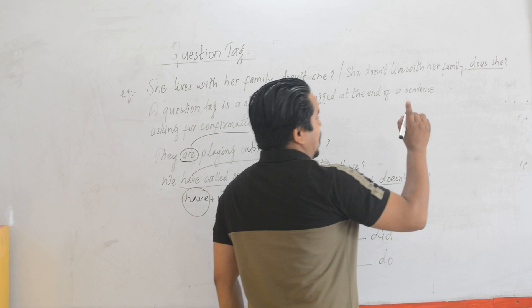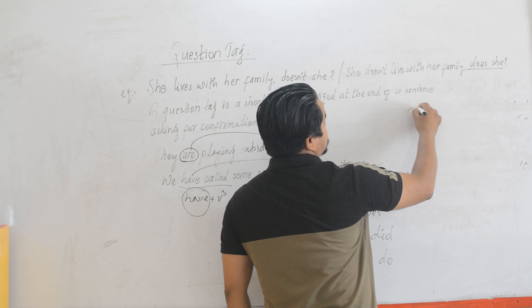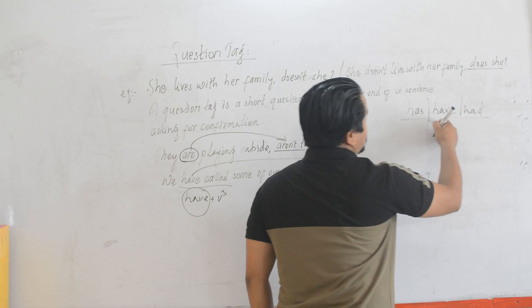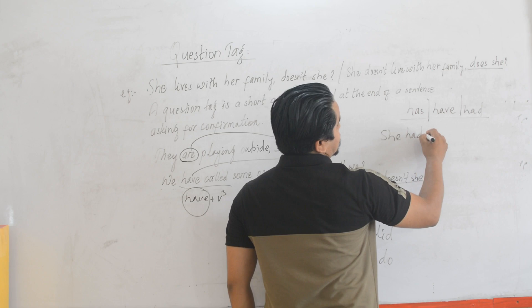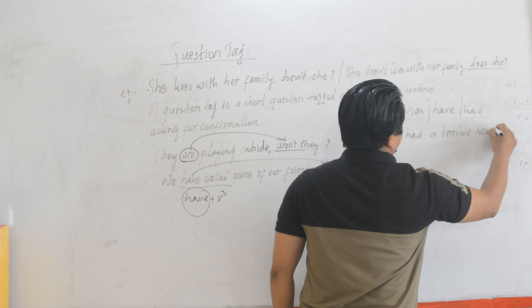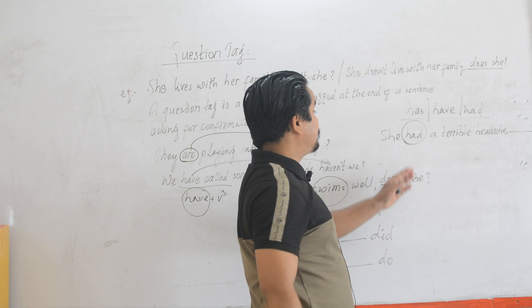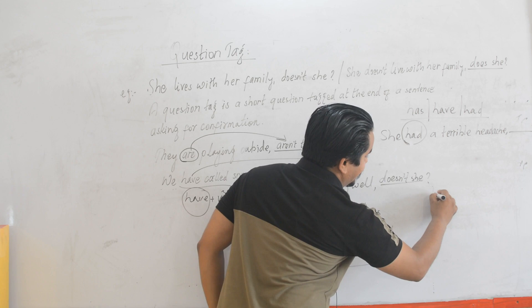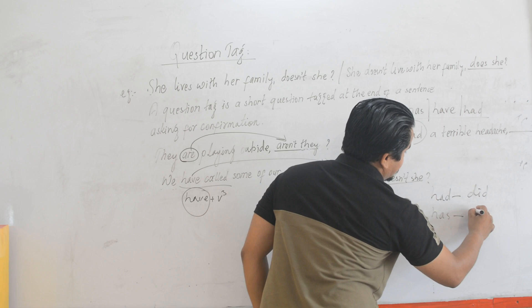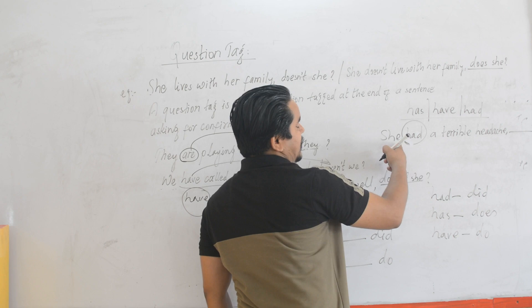Another important thing is: if 'is', 'have', or 'has' is used in a sentence without being followed by a verb in V3 form, then we call that the main verb. For example: 'She has terrible errors.' Since 'has' has not been followed by another verb, it is the main verb. So if 'is' is the main verb, it agrees with 'isn't'. If 'has' is the main verb, it agrees with 'hasn't'. Likewise, 'have' then 'haven't'. So the question tag we use here is 'hasn't she'.